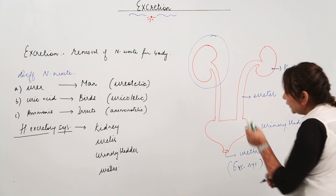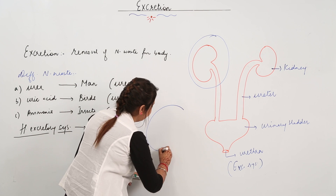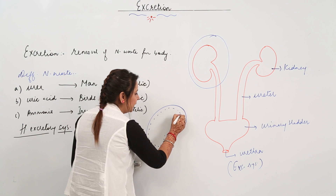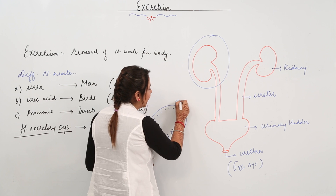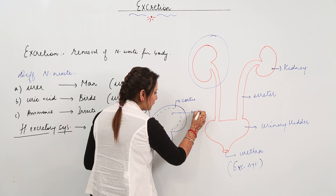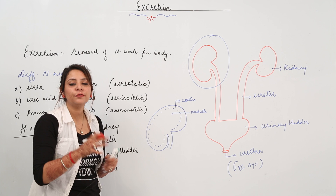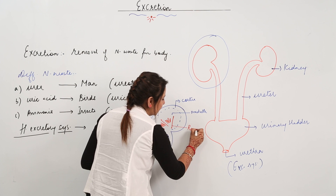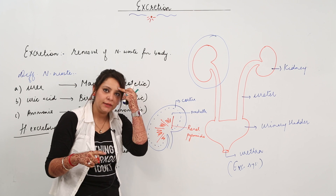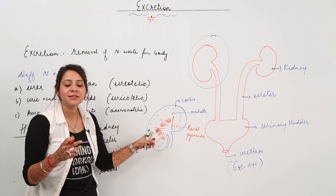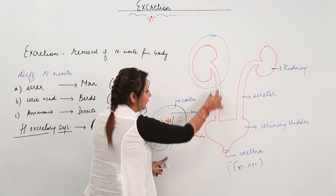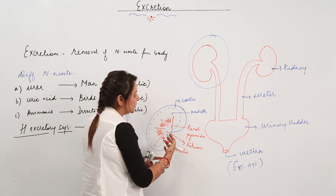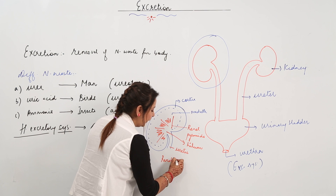What structure does the kidney possess? The kidney is a bean-shaped structure, roughly divided into two regions. The outer one is called the cortex and the inner one is called the medulla. It has a cluster of ducts called renal pyramids — whenever you see the word 'renal,' it is related to the kidney. The point from where the ureter originates is called the hilum.